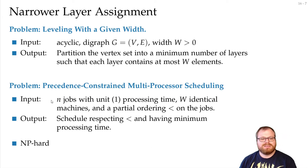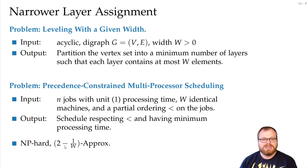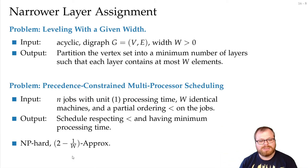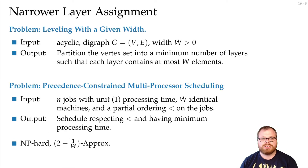This problem is NP-hard, but there are approximation algorithms. In particular, there is a (2 - 1/w) approximation: for every w, we can find in polynomial time a solution with at most that factor more processing time than the optimum. For w=2 this is a 1.5-approximation; for w=1 it is optimal; for w=100 it is a 1.99-approximation. As w grows large the factor approaches 2, but we are never worse than twice the optimum.